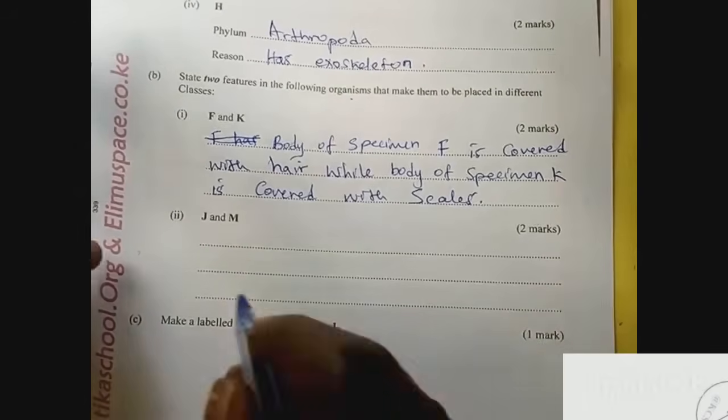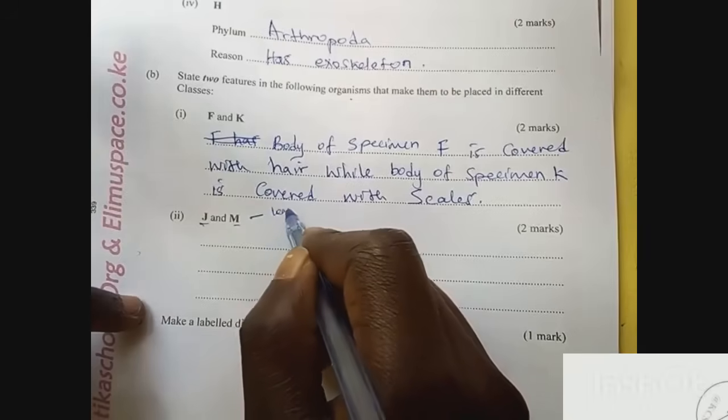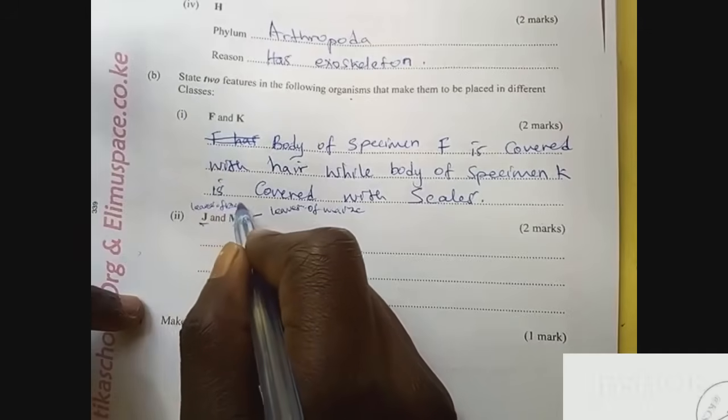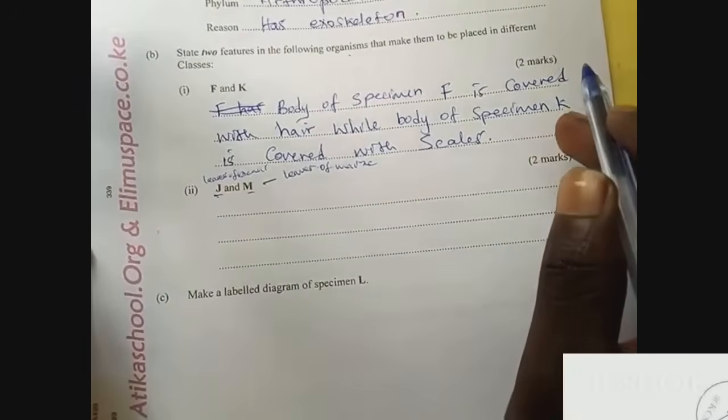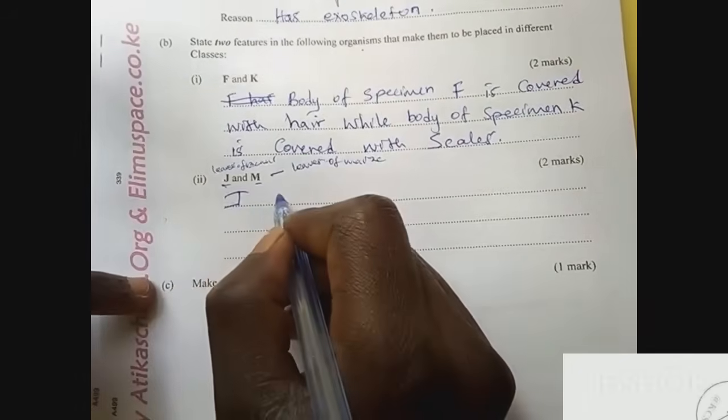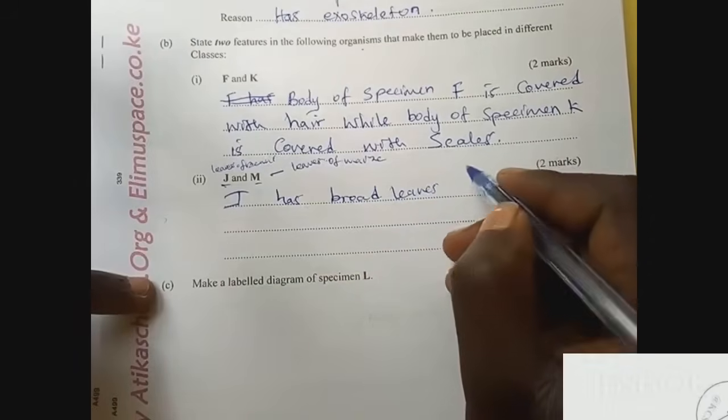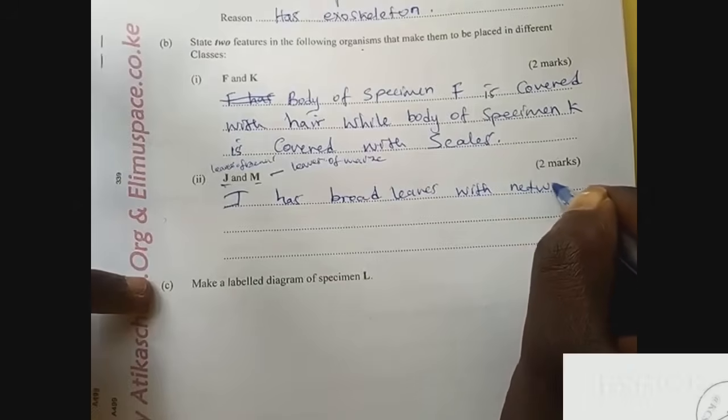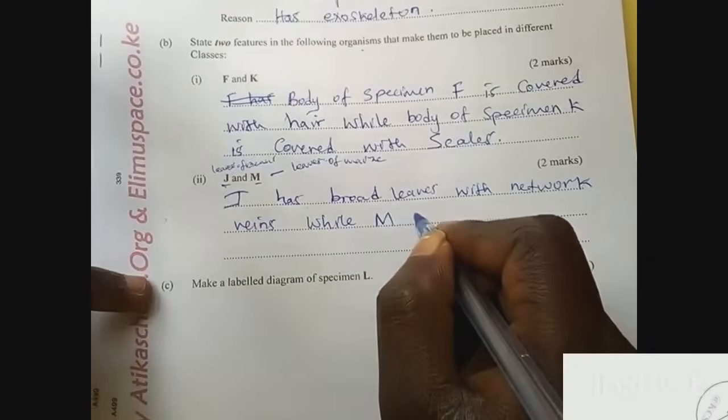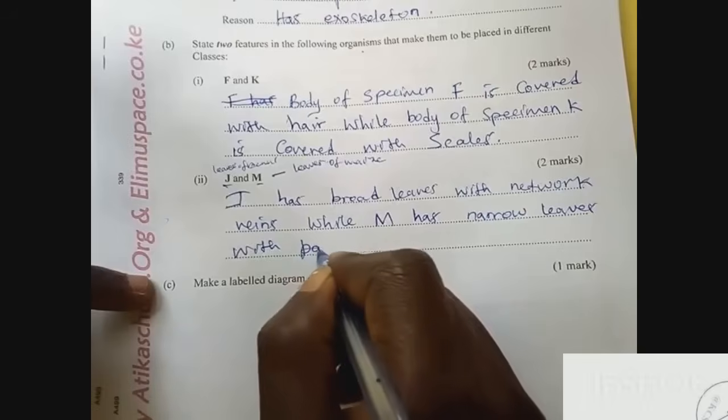J and M were given. M was maize, leaves of maize, and J was leaves of beans. The characteristics that make them to be classified in their classes: specimen M has parallel veins.